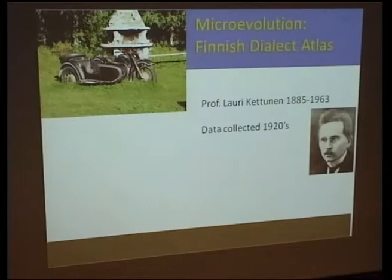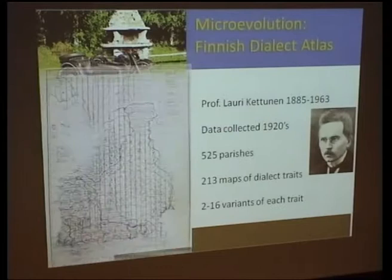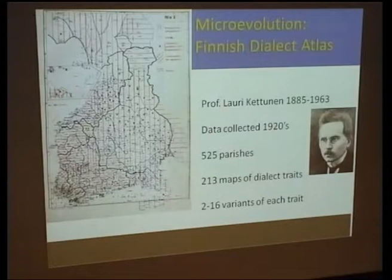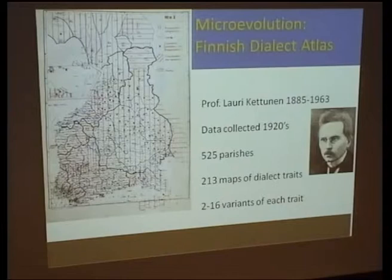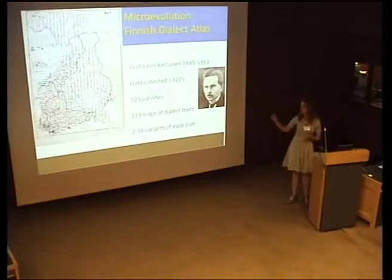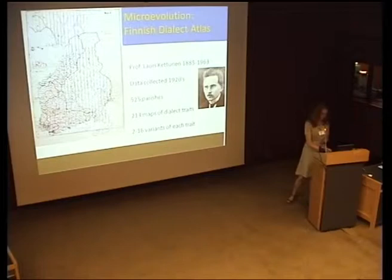Our micro-evolutionary studies are based on the Finnish Dialect Atlas, which was collected in the 1920s. It started when Lauri Kettunen bought a motorcycle and started to travel around Finland, visiting all the parishes and municipalities — over 500 of them. He collected dialectal traits by interviewing people, trying to gather over 200 dialectal traits from each municipality, each trait able to have 2 to 16 variants. The outcome was published as a large atlas, with each trait as a numbered map.